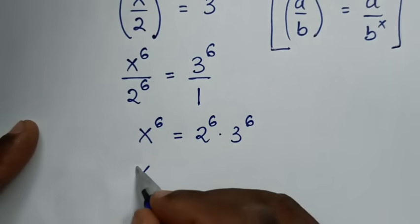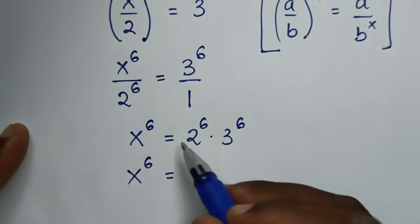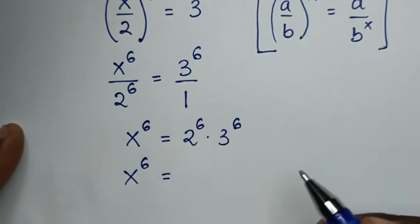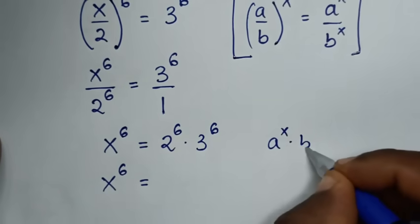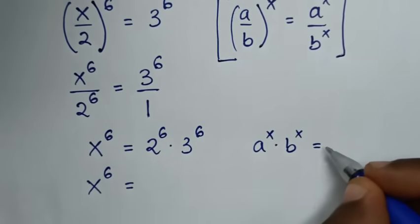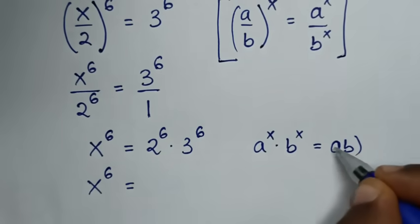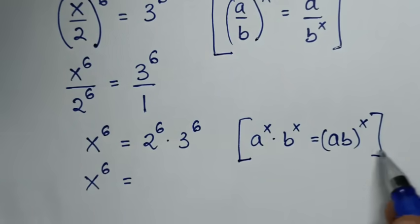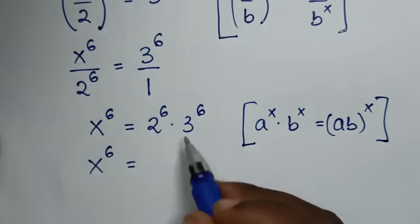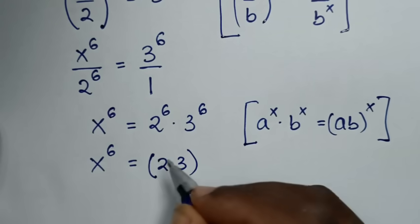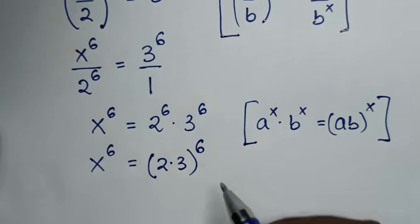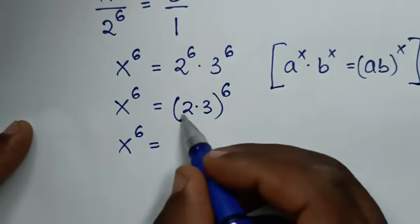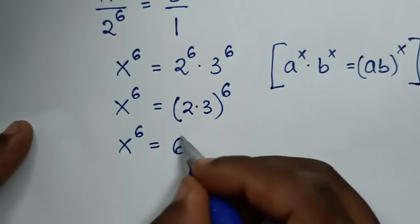Then it will be x to the power of 6 is equal to 2 to the power of 6 times 3 to the power of 6. This part here is in the form of a to the power of x times b to the power of x, which is equal to (a times b) bracket to the power of x. So we apply this form: it will be (2 times 3) bracket to the common power of 6. So it will be x to the power of 6 is equal to 6 to the power of 6.